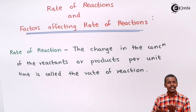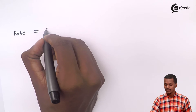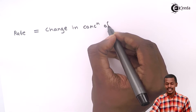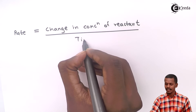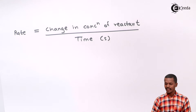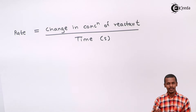Therefore, it could be represented in this way: the rate of reaction is equal to the change in concentration of the reactant with respect to time in seconds. The concentration of the reactant as well as the concentration of the product can be used, but the rate value will be negative when we take the concentration of the reactant in the numerator.